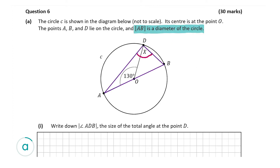If you have a triangle with one of its sides as the diameter of a circle — which we do, as side AB is a diameter — then that triangle will be a right-angled triangle. That's the corollary of Theorem 19. So this angle here and this angle here are not 90 degrees, which means the angle at D must be 90 degrees. The angle ADB is 90 degrees — that's our answer for A part 1, worth 5 marks.